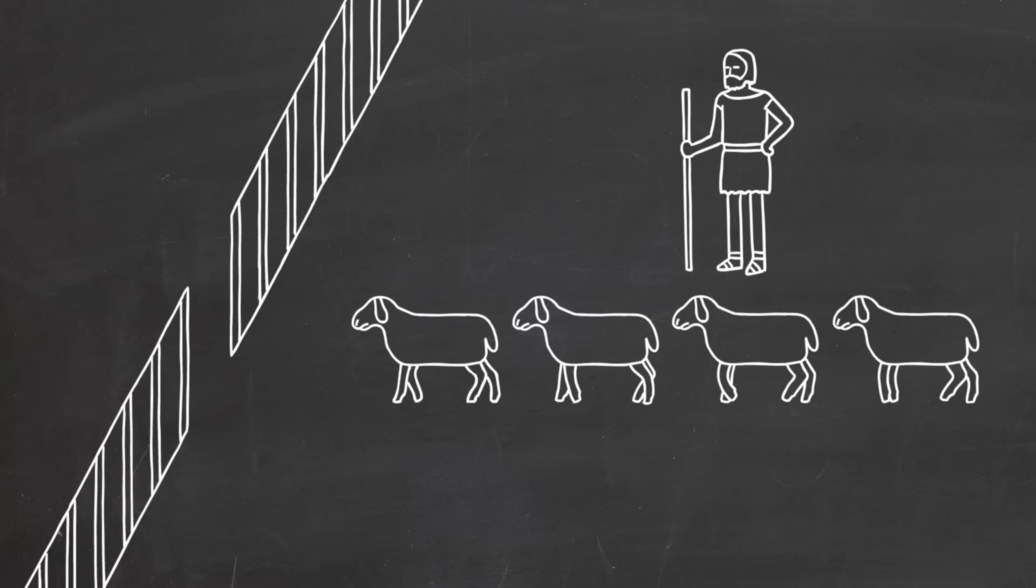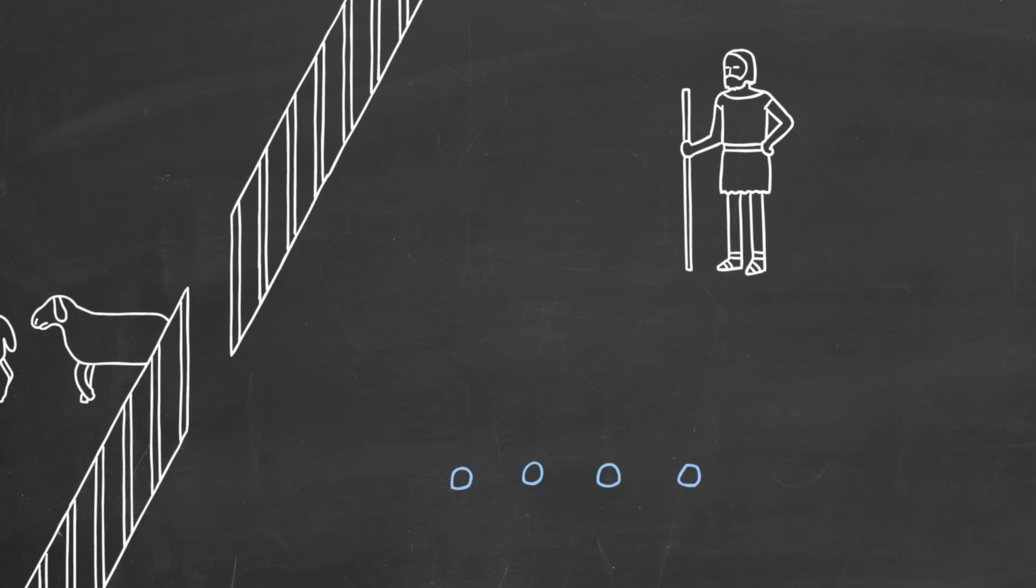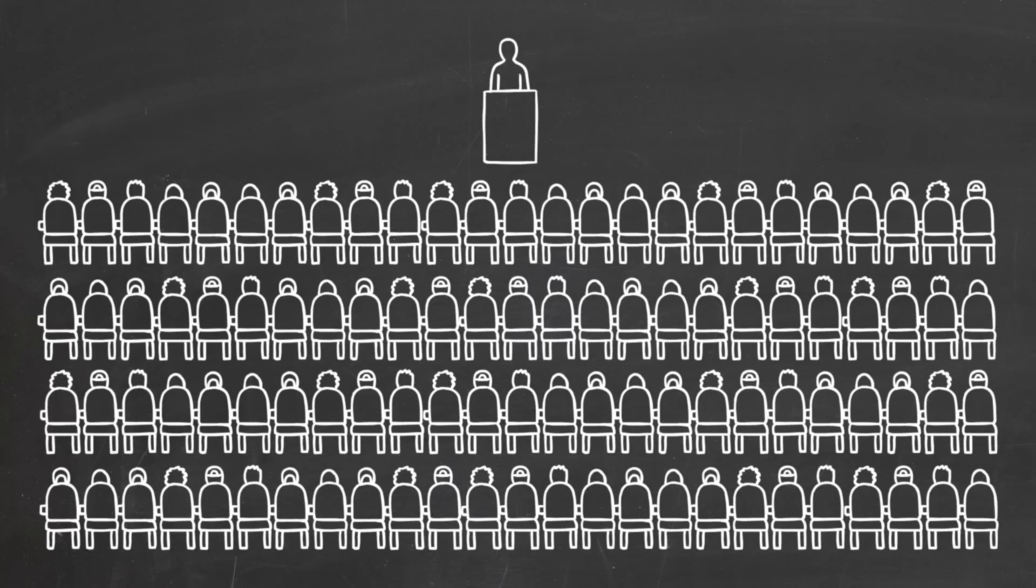In fact, we think that some ancient people, who spoke languages that didn't have words for numbers greater than three, use this sort of matching. For instance, if you let your sheep out of a pen to graze, you can keep track of how many went out by setting aside a stone for each one, and then putting those stones back one by one when the sheep return, so that you know if any are missing without really counting.